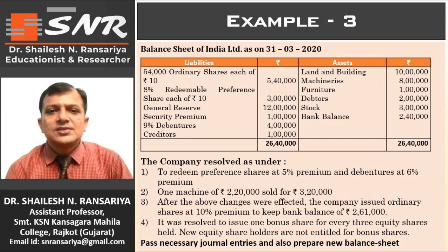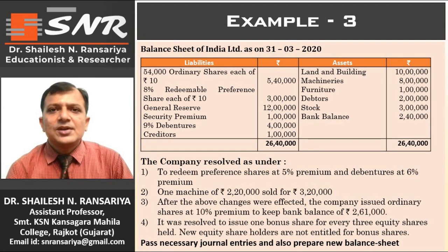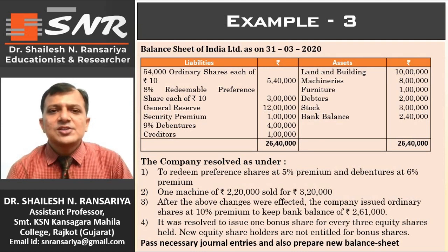In this example, three new points are given. Number 1: it is for the redemption of debenture. Number 2: it is for the bonus share. And one more important point: it is for the closing balance of cash. When the closing balance of cash is given in the example, we have to prepare a cash and bank account for the calculation of the amount of new shares.